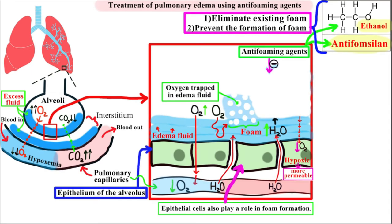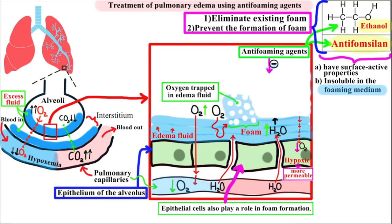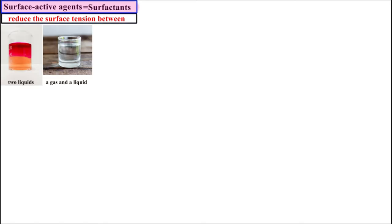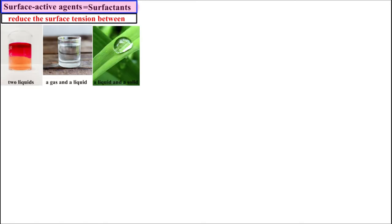Generally these agents have surface active properties and are insoluble in the foaming medium, which is the edema fluid. Surface active agents, also called surfactants, are substances that when added to a liquid reduce the surface tension between two liquids, between a gas and a liquid, or between a liquid and a solid — in our case between a gas and a liquid. Anti-foaming agents are surfactants too, but a different kind.